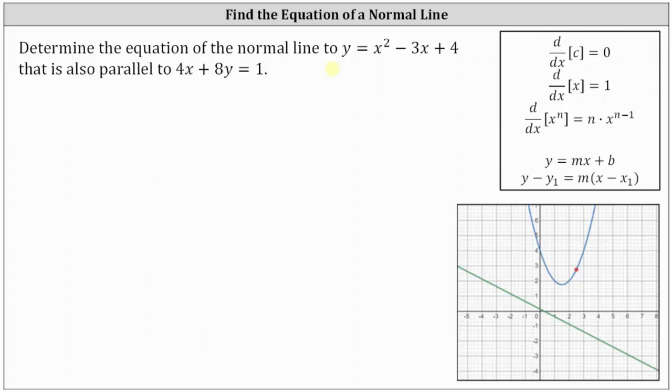Determine the equation of the normal line to y equals x squared minus 3x plus 4 that is also parallel to 4x plus 8y equals 1.